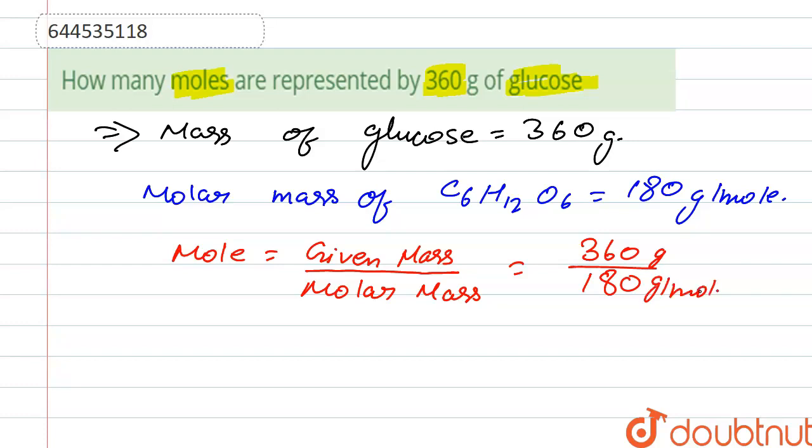So after solving this, we get two mole of glucose present in 360 gram of glucose.